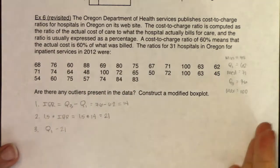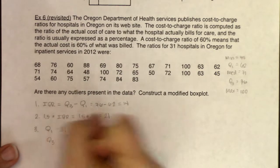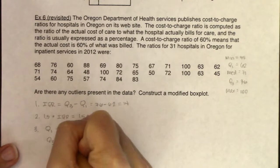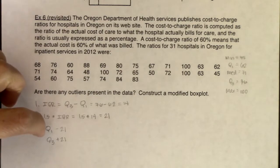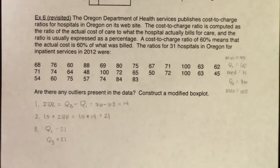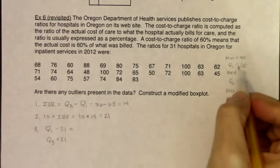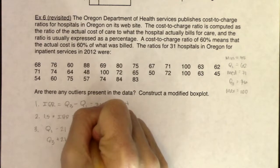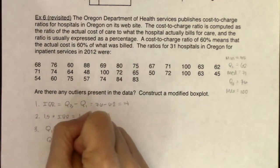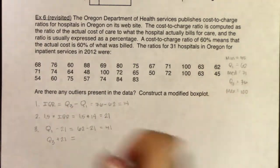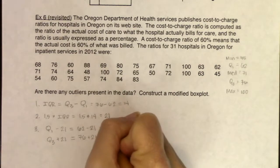On the flip side, we want to raise the upper bound of our safety zone by taking Q3 and adding 21 to it. Our Q1 was 62, so 62 minus 21 gives us 41. Our Q3 was 76, so 76 plus 21 gives us 97. These two numbers — 41 and 97 — create your safety zone.